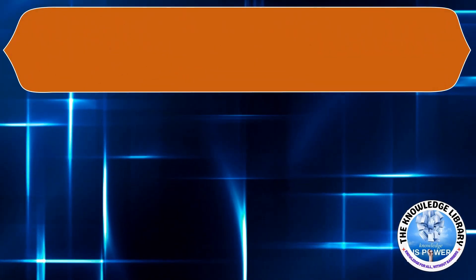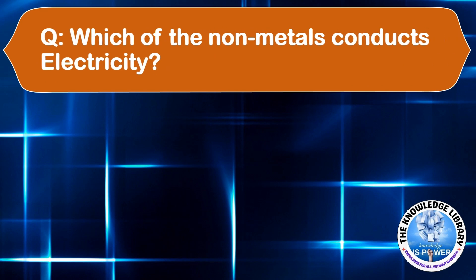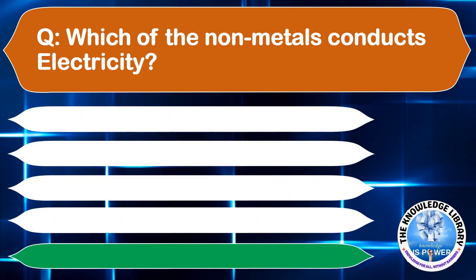Which non-metal conducts electricity? A: Diamond, B: Graphite, C: Sulfur, or D: Fluorine. The correct answer is option B, Graphite.